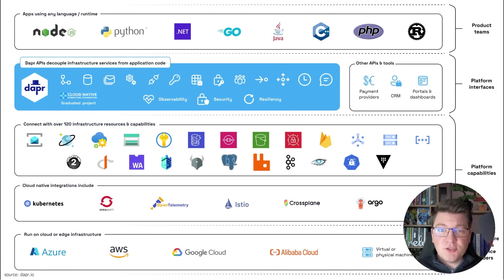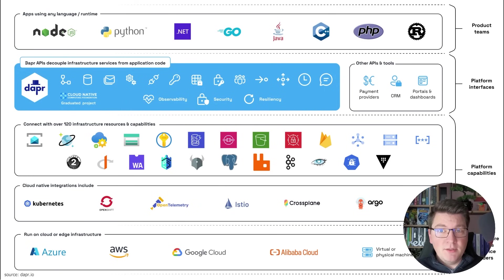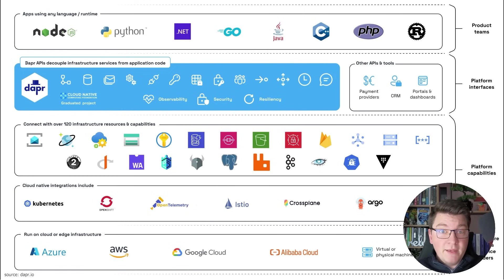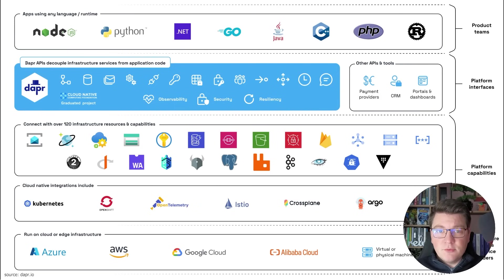But first, what is DAPR? DAPR is a runtime that you can install on your machine and run next to your applications, which gives you the ability to build microservices applications that are completely decoupled from the underlying infrastructure. Everything your applications need to know about is DAPR and the APIs it exposes, and you have the freedom to pick and choose which infrastructure components you want to run.